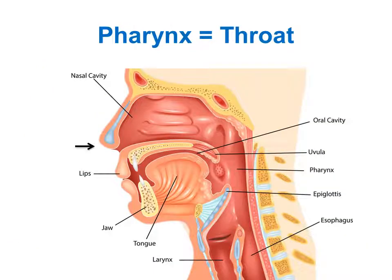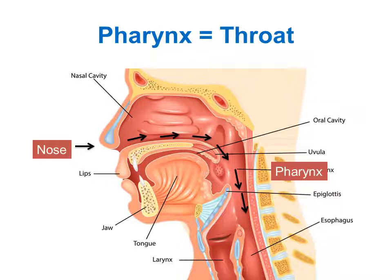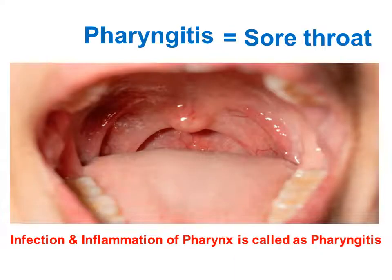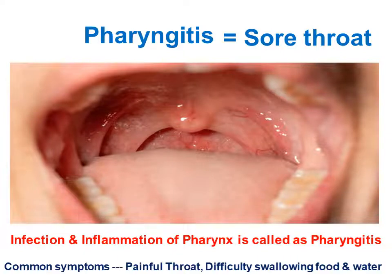We breathe in air from the nose. From the nose, air enters the pharynx. Pharynx is commonly called the throat. Bad bacteria entering the pharynx will cause infection, which leads to inflammation. Infection and inflammation of the pharynx is called pharyngitis — we call it a sore throat. Sore means painful. A person suffering from pharyngitis normally holds their hand on the throat, and there is difficulty in swallowing food and water.